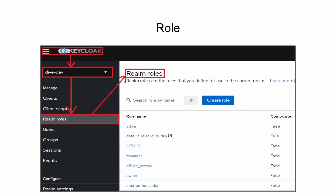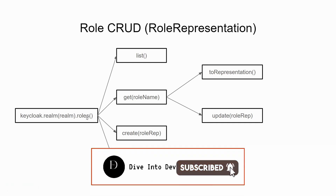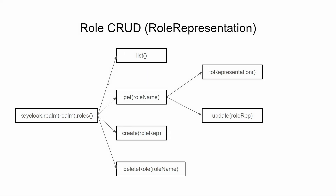Similarly for roles, in the Keycloak UI we go to a specific realm, then select the realm roles, which shows us the list of roles. The API call in the Spring Boot application follows a similar pattern: keycloak.realm(realmName).roles().list() gives the list of RoleRepresentations. .create() will create a RoleRepresentation, and .deleteRole() uses the role name, not the id. .get(roleName) gives a pointer to that specific role, .toRepresentation() provides the object, and .update() updates that specific role representation.